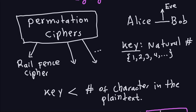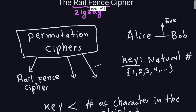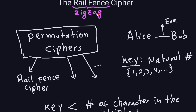You always want to have your key extremely less than the number of characters in the plaintext. So if you want to send messages, use a short key — you wouldn't want your key to be, for example, 8000, because that's not going to make it very secure at all. So you want to choose your key to be small; it should be much smaller than the number of characters in the plaintext. Now, the name 'rail fence' and 'zigzag' — you will see why it's called that in a second.